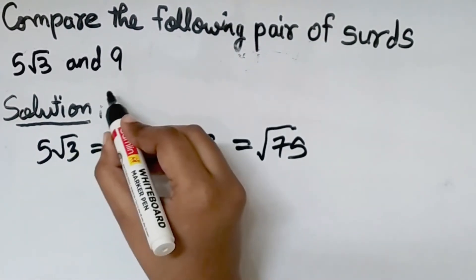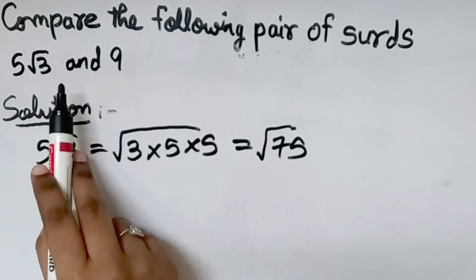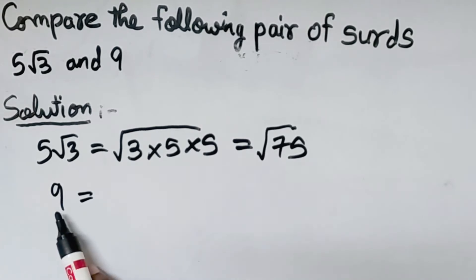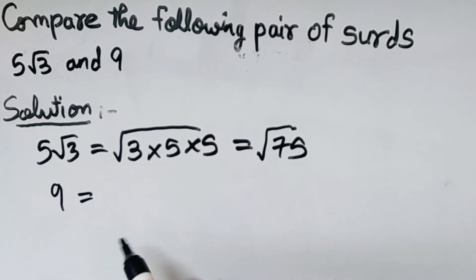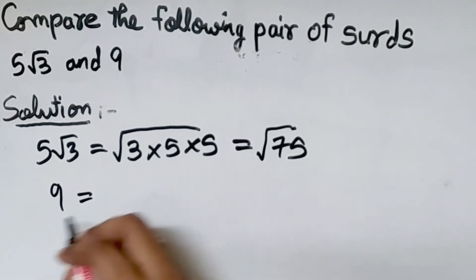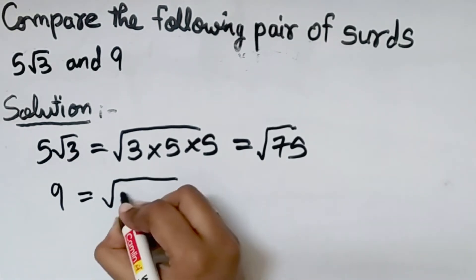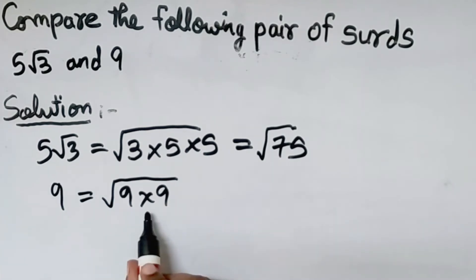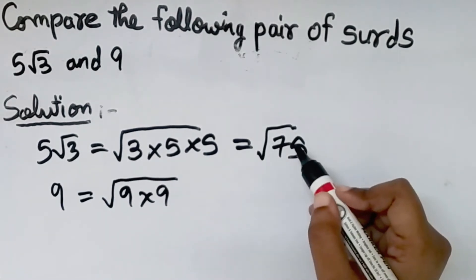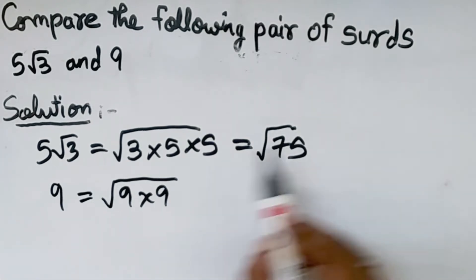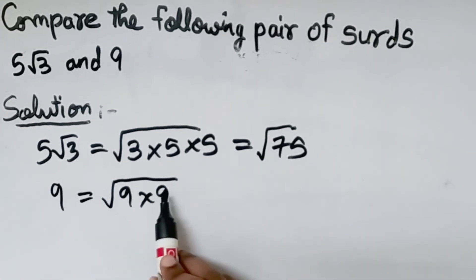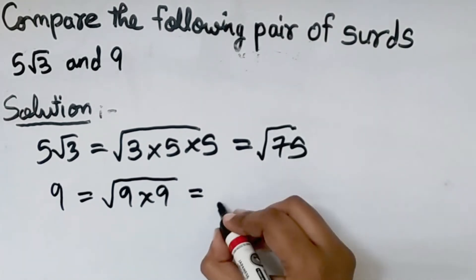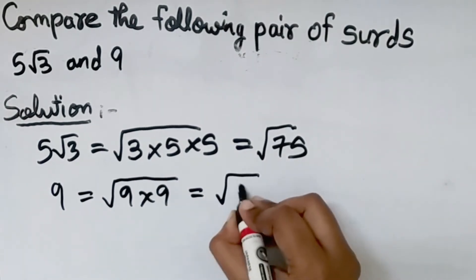For comparing surds, the order should be equal. Here 5 root 3 has a square root sign, but 9 does not. So we write 9 as a square root: 9 equals square root of 9 into 9, bringing the 9 inside the square root. This gives square root of 81.